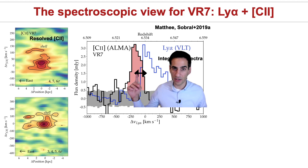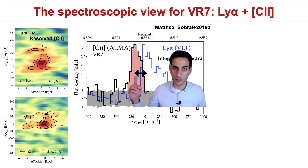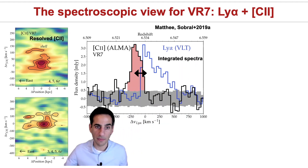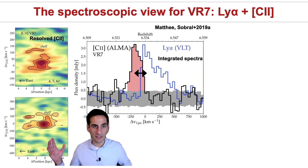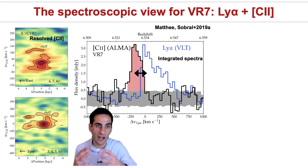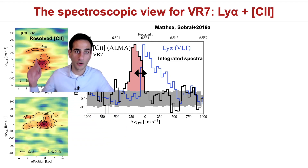Comparing the integrated spectra of Lyman-alpha with C2 allows us to get a systemic redshift and interpret velocity shifts in terms of the ionized bubble size or radiative transfer effects. Perhaps even more interesting is that C2 is detected at such high signal-to-noise that we can start to look at the dynamics and their complexity, including finding evidence for possible outflows or shells within these galaxies.